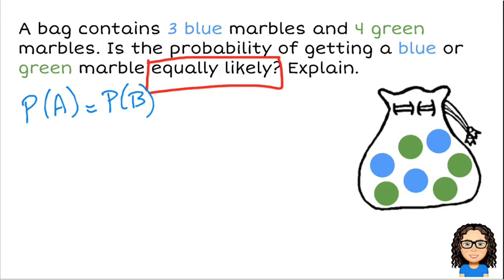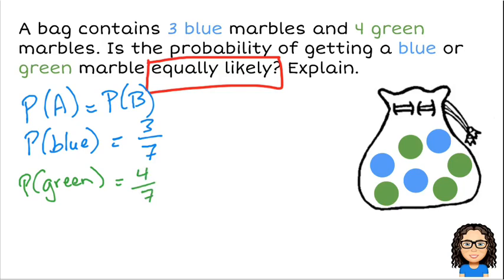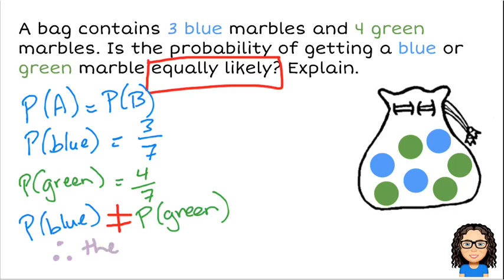For example, so what we want to know in this case, we've got two different colours, blue and green. So we want to know what's the probability of blue. And in this case, we have three blue marbles out of seven. Then we want to know what's the probability of having a green marble. And in this case, we've got four green marbles out of seven. So now I can look at those two probabilities and say, are they the same? And in this case, I can say probability of blue does not equal the probability of green. Therefore, these are not equally likely.